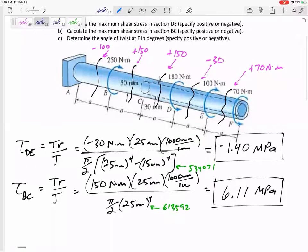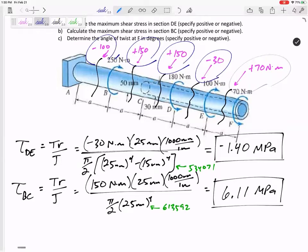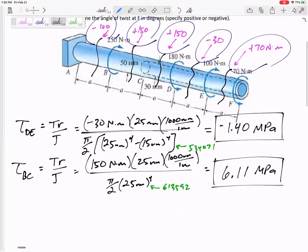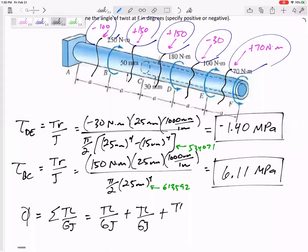All right, so if we hadn't already done this, we would need to find all of these internal torques. We would need to find all of those internal torques. And the angle of twist would be the sum of all of those TL over GJ. So maybe even T, L over GJ of that section. Now I know this is a lot of writing.